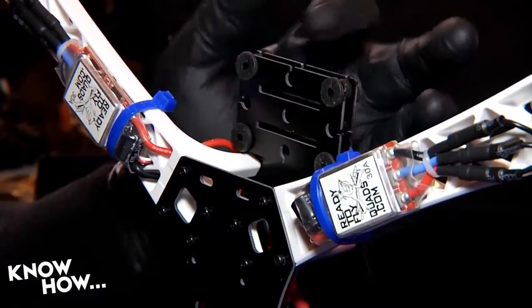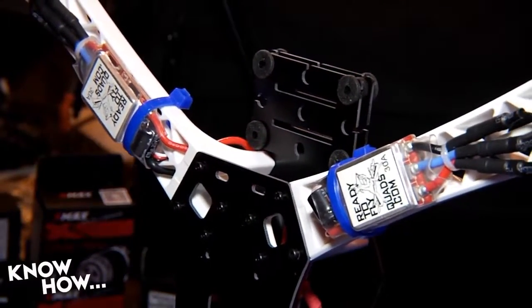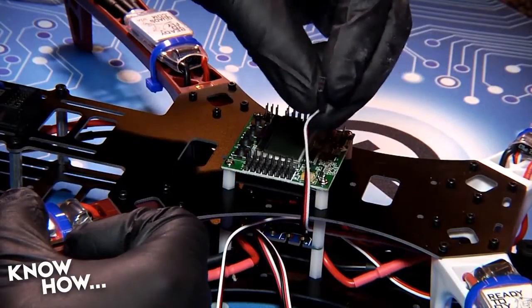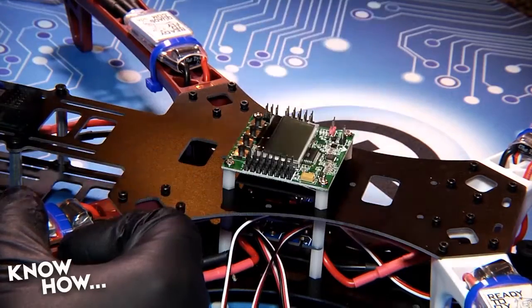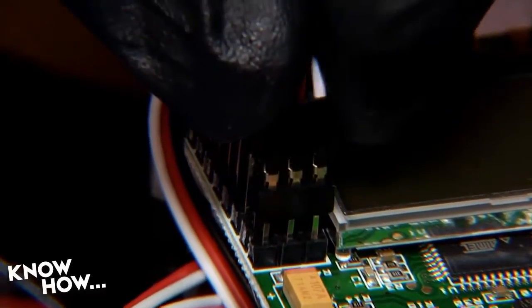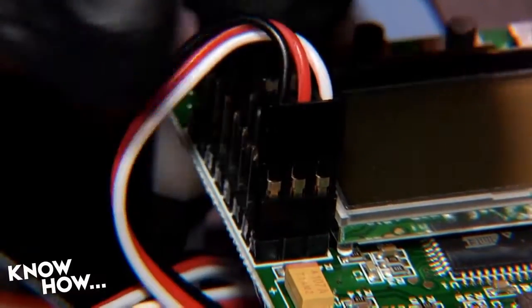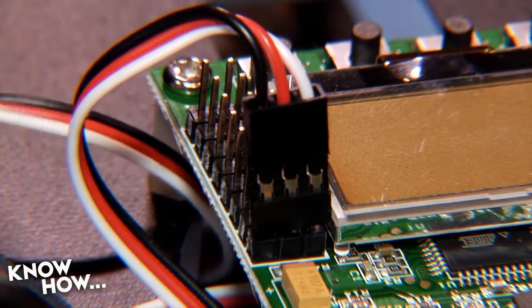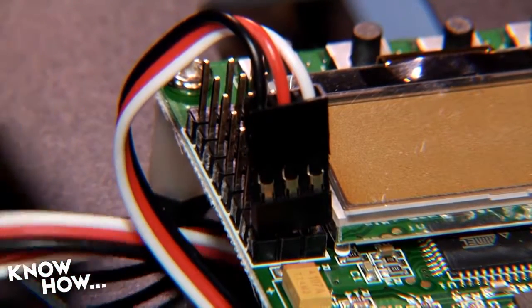Now it's time to wire your flight controller. This is a basic platform Alien X, so we're using a KK flight controller. It doesn't do GPS or return to home or even altitude hold. Basically, all it will do is keep your craft level. But it's easy to wire and inexpensive, so it's perfect for this build. If you're using something else, you'll need to modify these instructions to fit your controller.